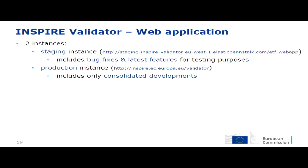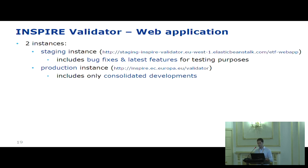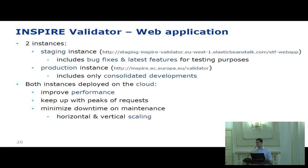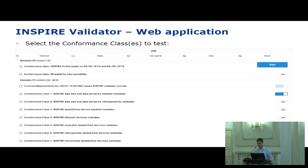For the web application there are two instances. The staging instance is for testing purposes and always includes the latest bug fixes and new functions. The production instance includes only consolidated developments — already tested and agreed upon by the community and the MIG-T. Both instances are deployed on the cloud (AWS) because with approaching INSPIRE deadlines and the validator's planned role for monitoring and reporting, many more people are using it, requiring improved performance and minimized downtime.